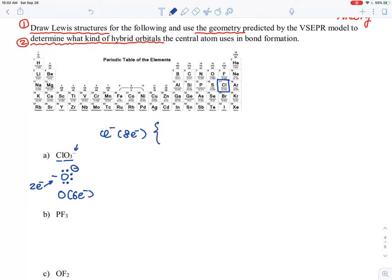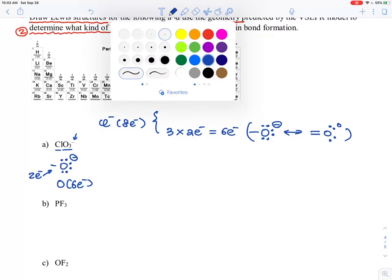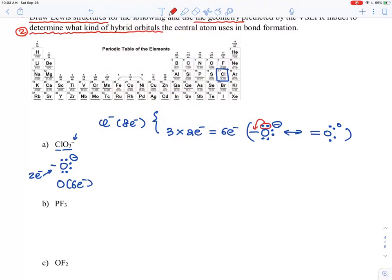There are 3 electrons, so you form 3 bonds, and each oxygen needs 2 electrons. So 6 electrons are used up to form this oxygen with double bonds and formal charges. They can go back and forth by forming double bonds with no formal charges to minimize the formal charges.